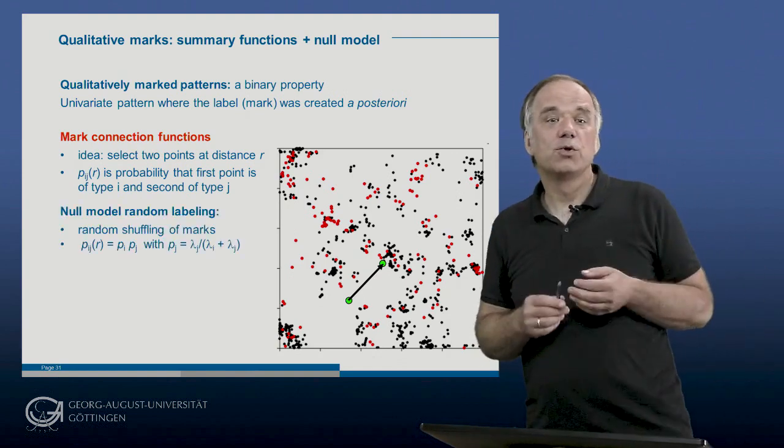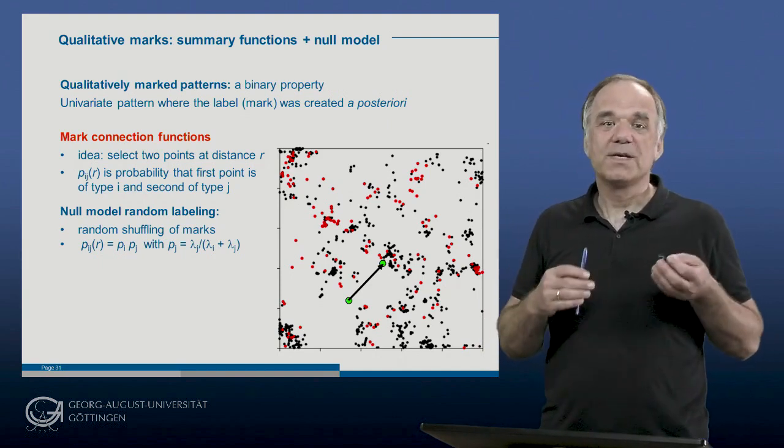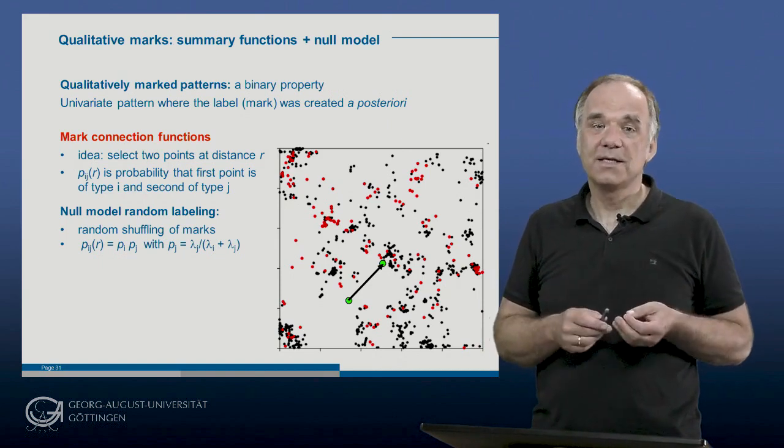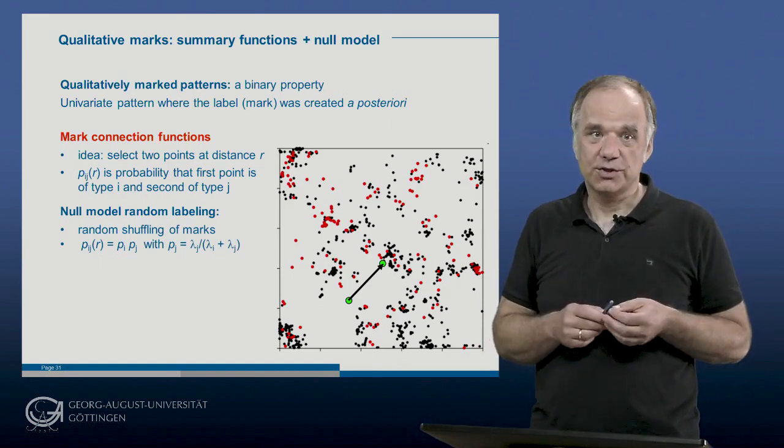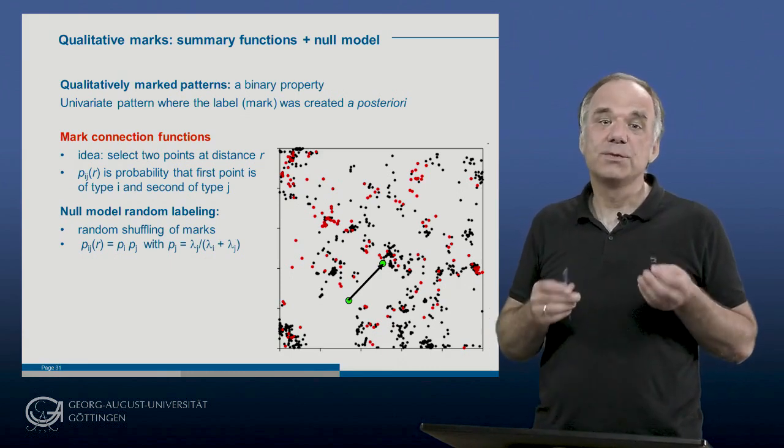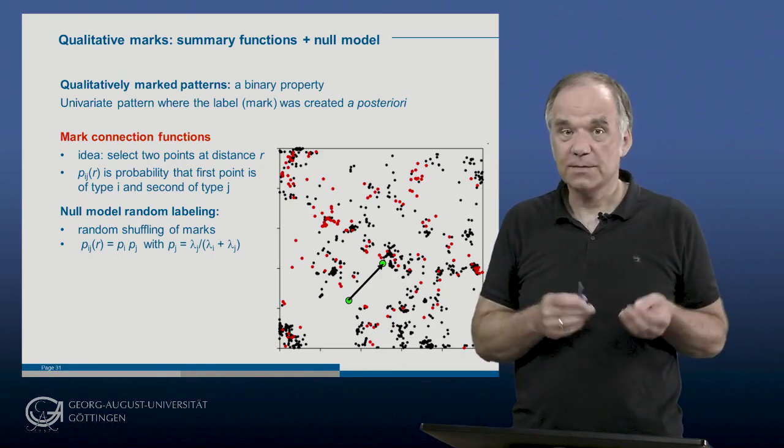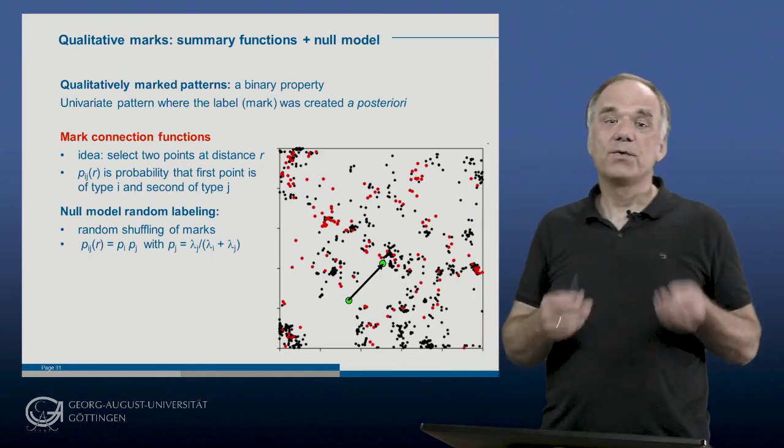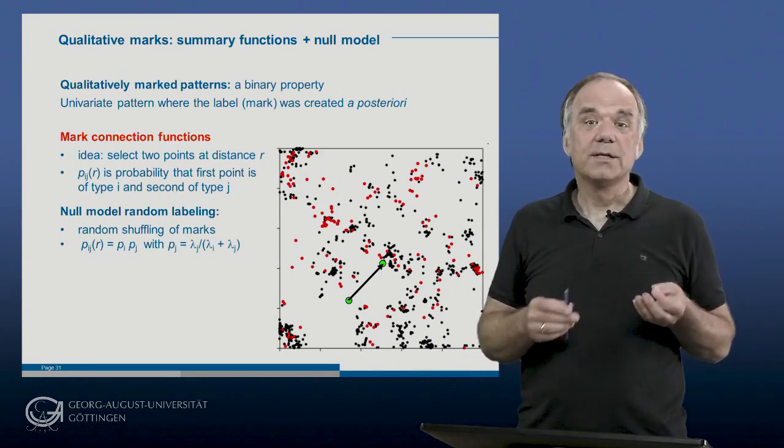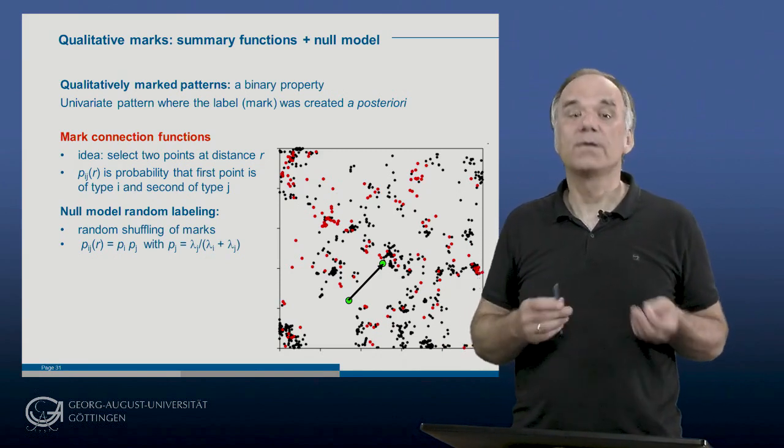What would be a suitable null model that randomizes this data structure? Because we are not interested in the spatial structure of the univariate pattern, we keep it unchanged. But because we are interested in the second process that distributes the marks over the points, we randomize this second process. We use a null model called random labeling that randomly shuffles the marks, for example dead versus alive, over the points.